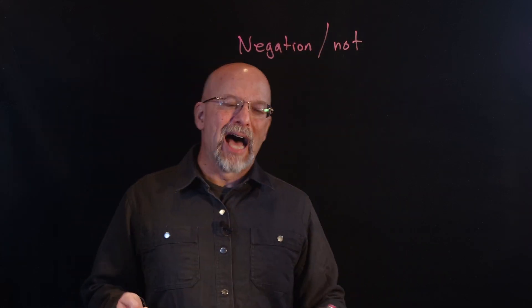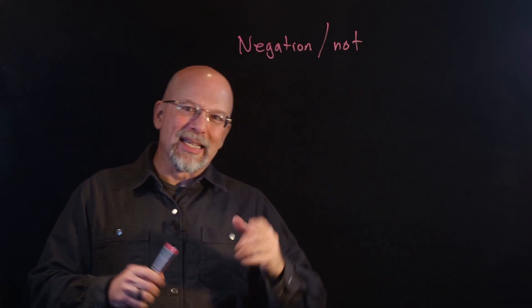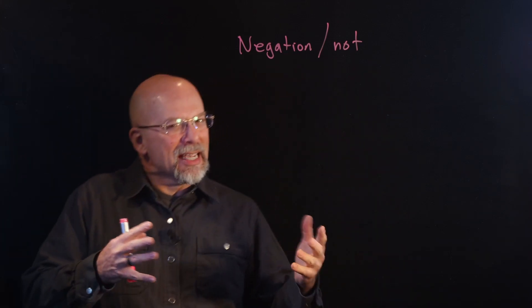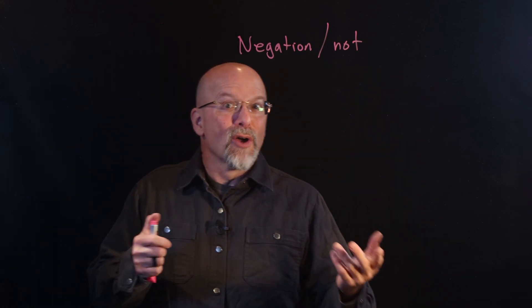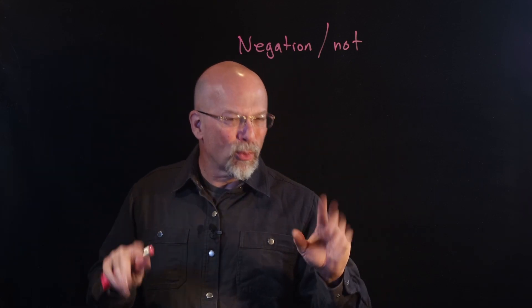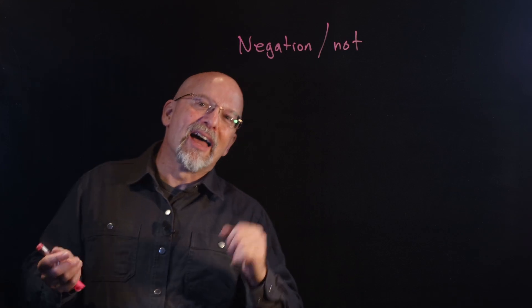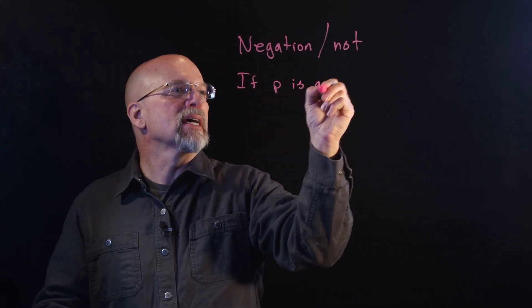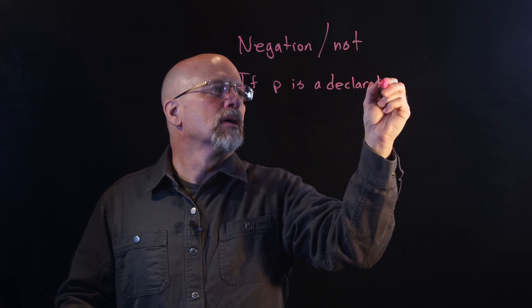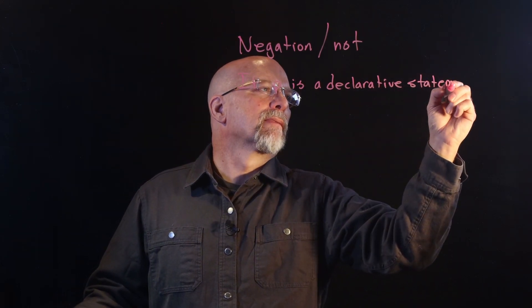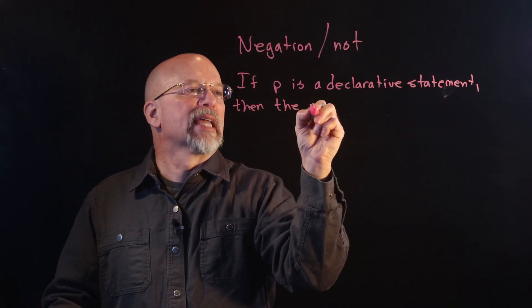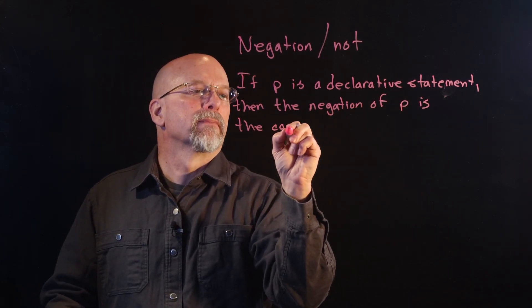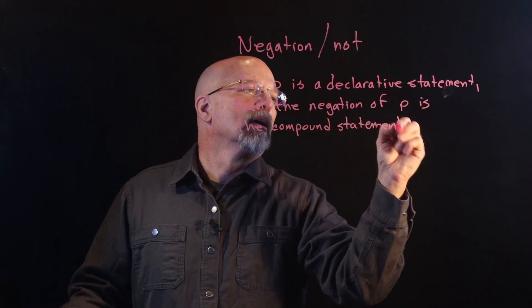This is just called negation. Sometimes you hear this referred to as 'not.' With numbers, the negative of a number is pretty obvious — if I gave you five, the negative of that is negative five. In the case of logic, we really only have two values: true or false. So the negation of a true is a false, and the negation of a false is true. So if P is a declarative statement — a proposition — then the negation of P is the compound statement 'not P.'